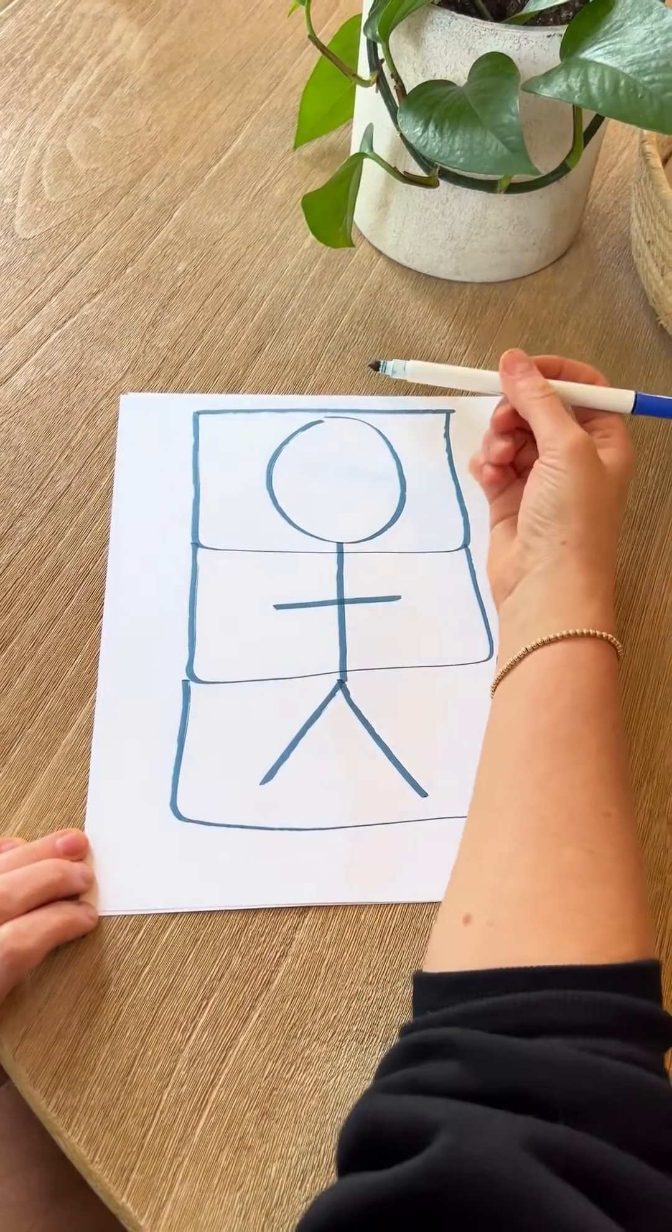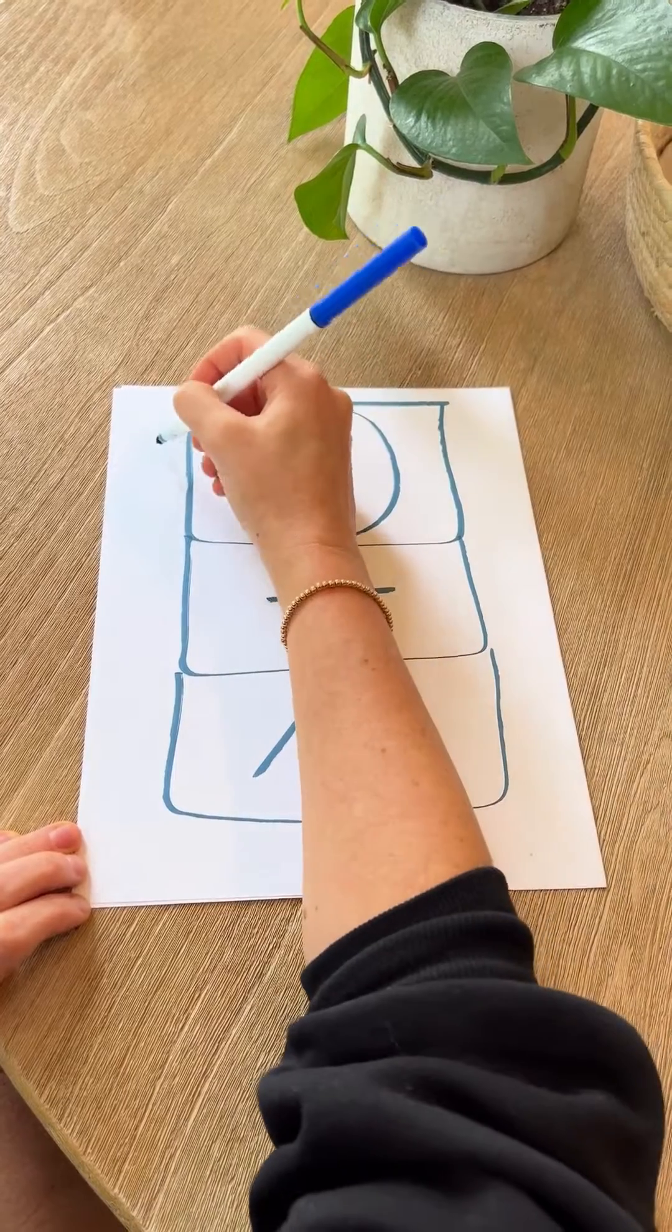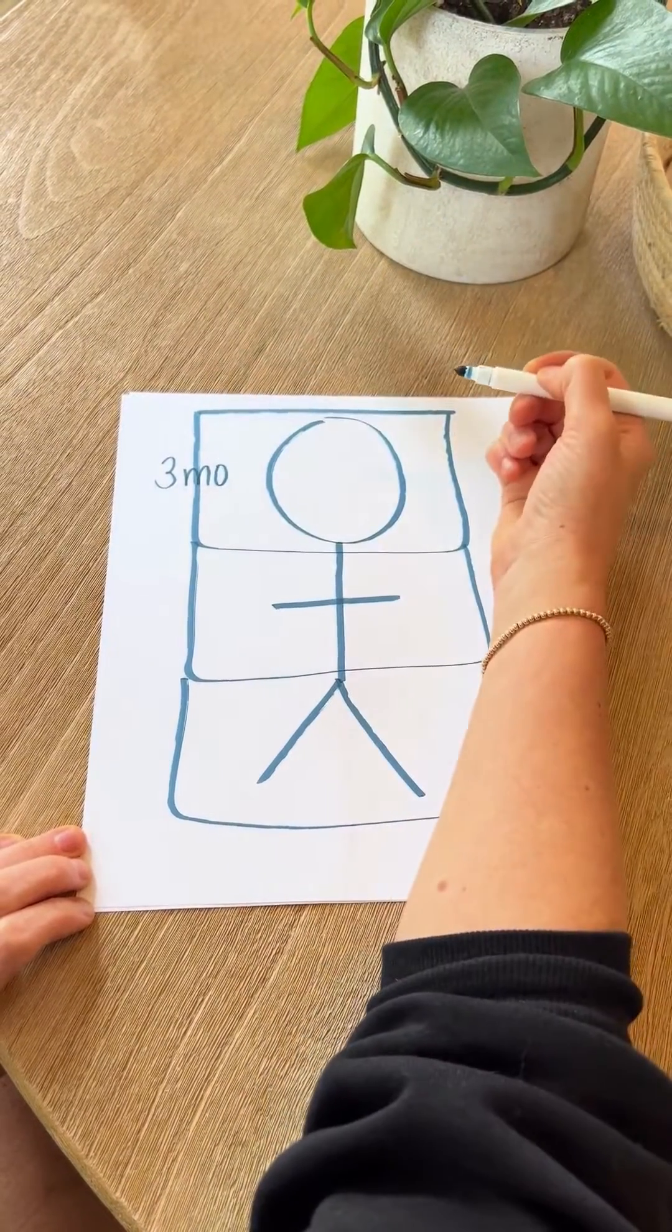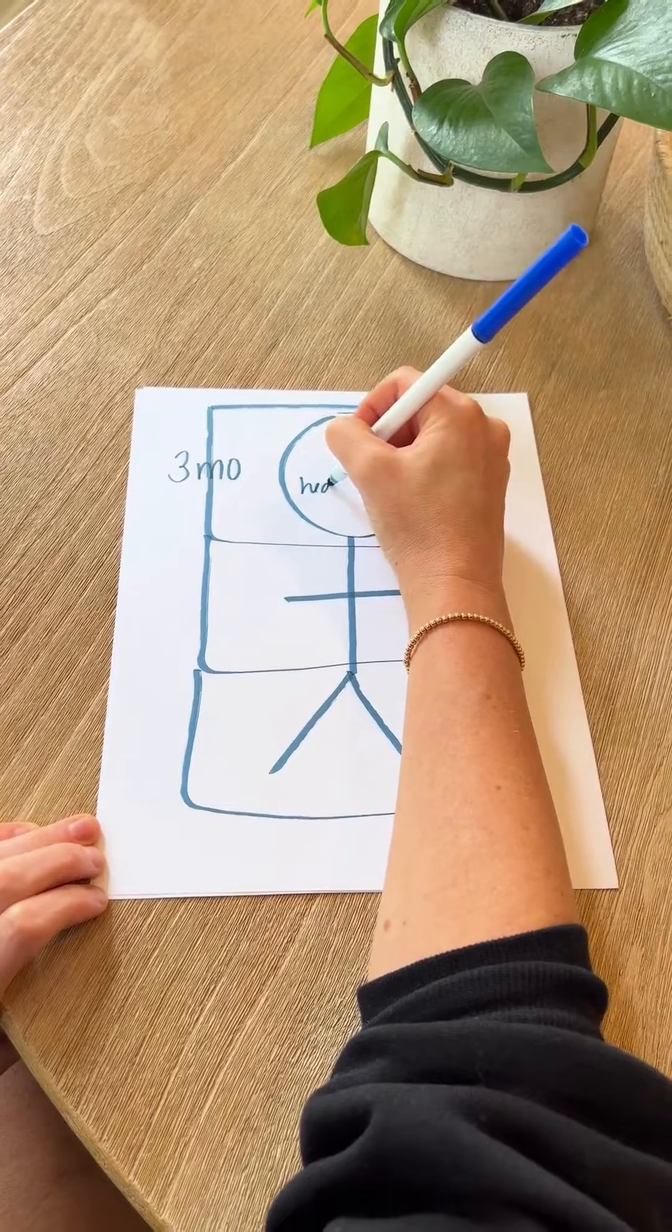From here you can figure out all your major milestones. So in the first box, this is three months. This shows you that the person has head control.